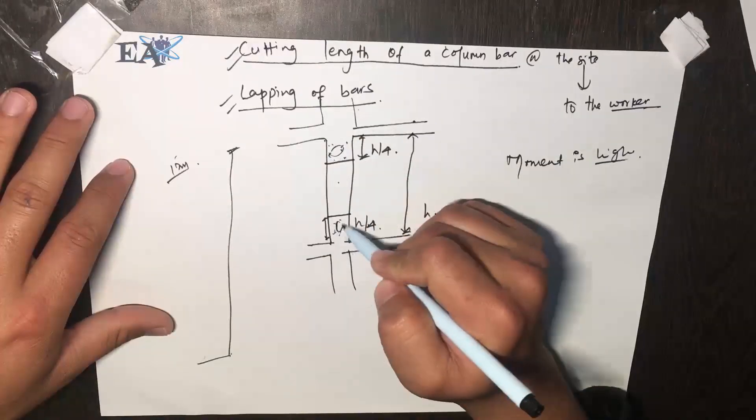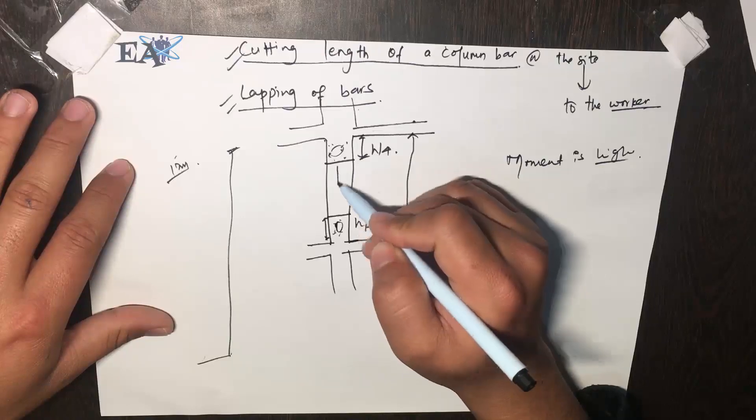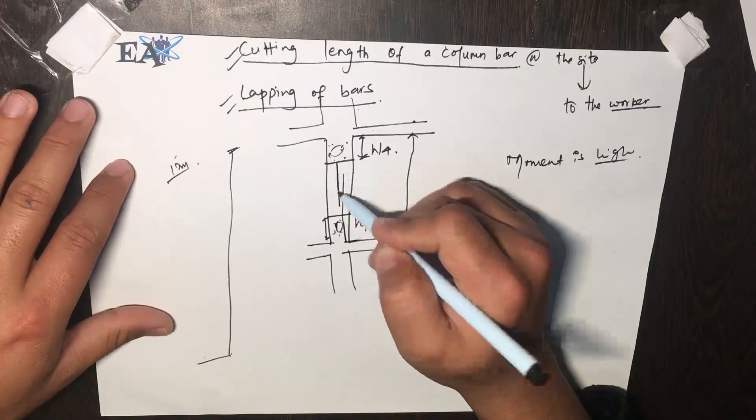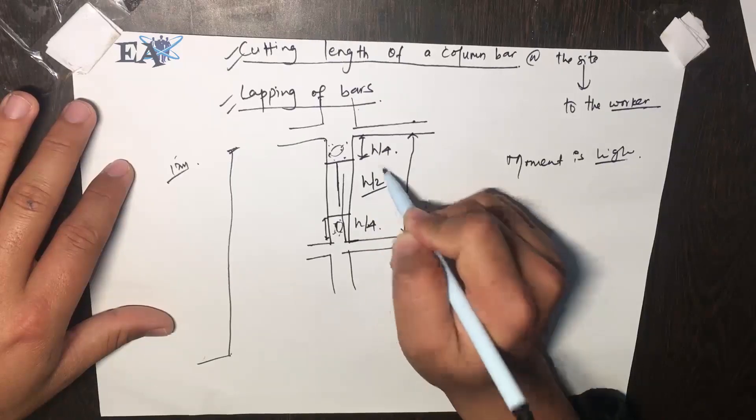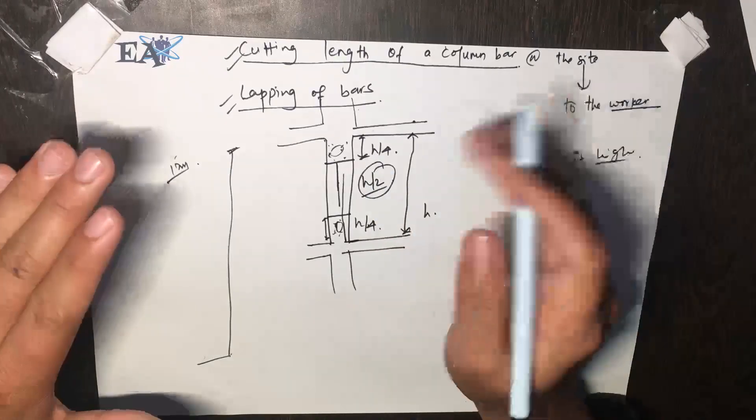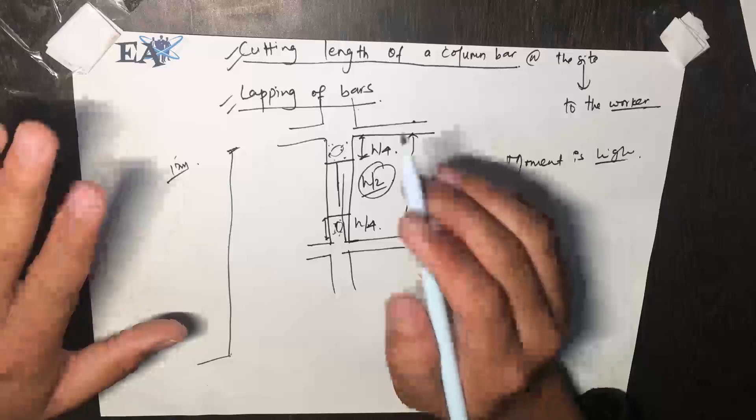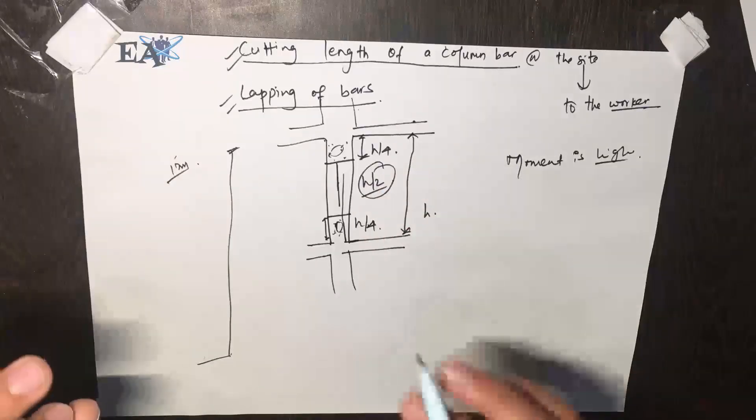Due to this reason, lapping of bars you cannot put here and here. You have to lap your bar within this portion only, within this h by 4, h by 4. This is h by 2, that is mid h by 2 portion only. So you have to lap your bars here.